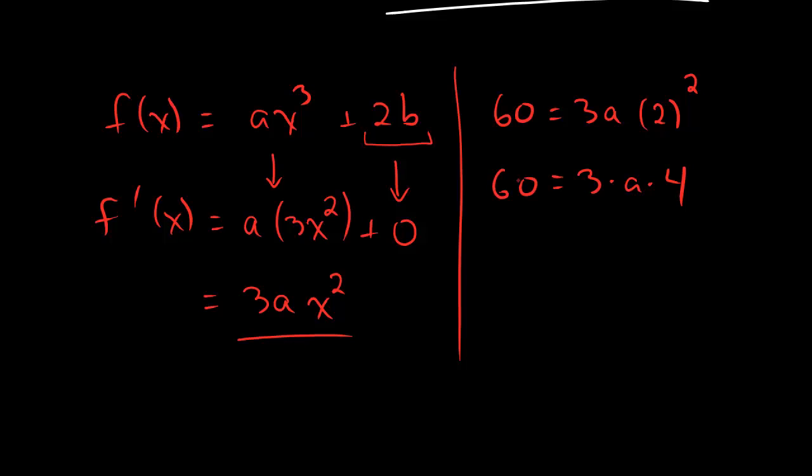60. And 3 times 4 is 12. And, dudes, check this out. This enables us to solve for a. It's super easy. I'm just going to divide both sides by 12. And 60 divided by 12 is 5. So, what we found is that a equals 5.